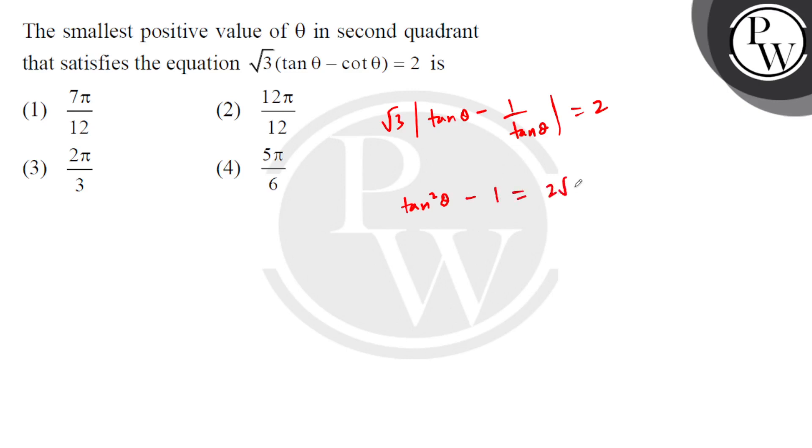2 tan theta upon root 3. Right, now here we have root 3 tan squared theta minus 2 tan theta minus root 3